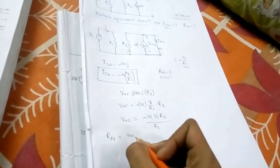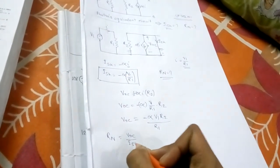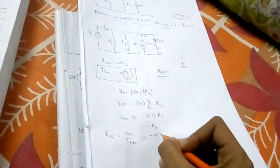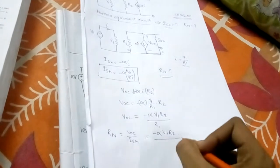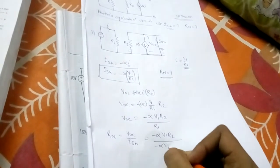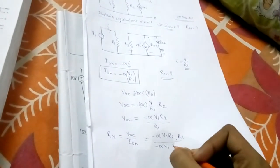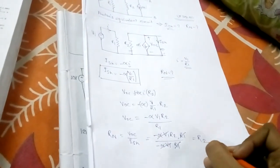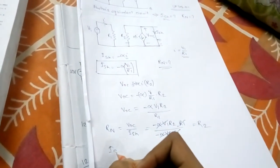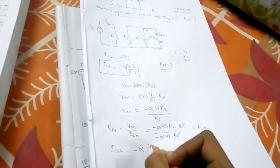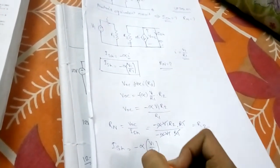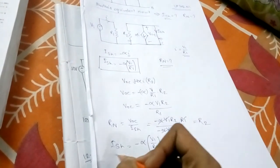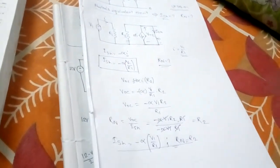The Norton resistance R_n equals V_OC divided by I_sh. That is: (minus alpha·V1·R2/R1) divided by (minus alpha·V1/R1), which gives R_n = R2. So the final result is: I_sh = minus alpha·V1/R1 and R_n = R2.